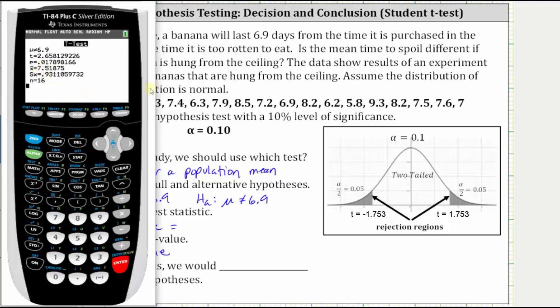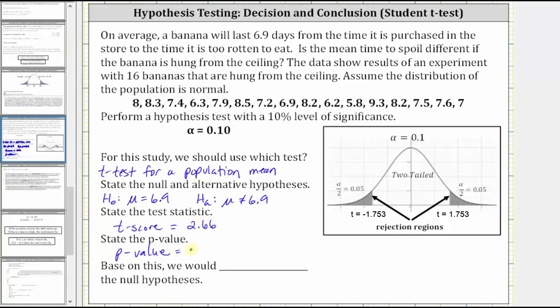Let's go ahead and record this. If we take a look at the graph on the right, for a two-tailed test when alpha is equal to 0.1, notice the t-scores are 1.753 and negative 1.753, where the shaded regions are the rejection regions.